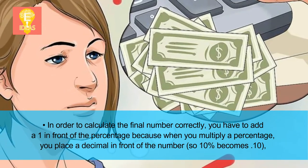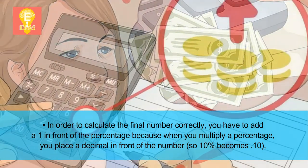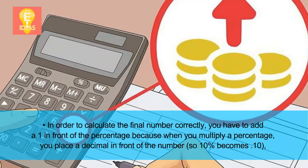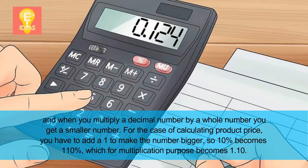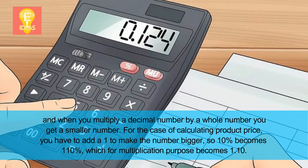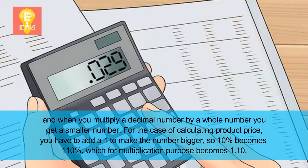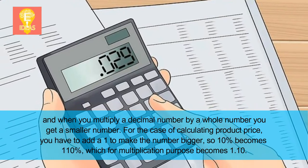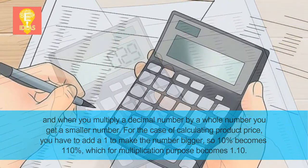To calculate the final number correctly, you must add a one in front of the percentage. When multiplying a percentage you place a decimal in front — so ten percent becomes 0.10 — and multiplying a decimal by a whole number gives a smaller number. To make the product price larger, add a one, so ten percent becomes one hundred ten percent, which for multiplication becomes 1.10.